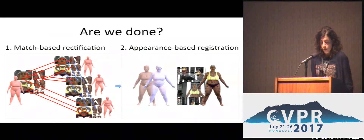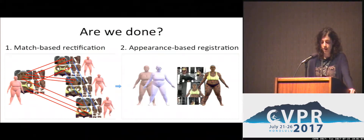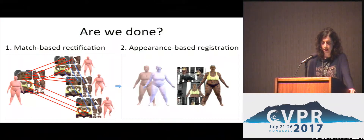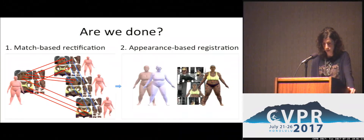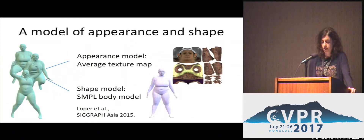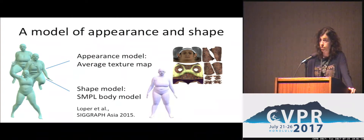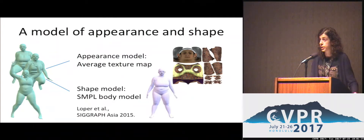Could we stop here? We can improve our results further, because first, we have this asynchrony between geometry and color capture that we are not exploiting here. Second, we know that we are dealing with human bodies, so we can use better regularization than just the smoothness term. So what we do is take our match-based registrations and use them to compute an appearance model by simply averaging texture maps from multiple frames, and a shape model. For this, we use the SMPL body model, which is available online.